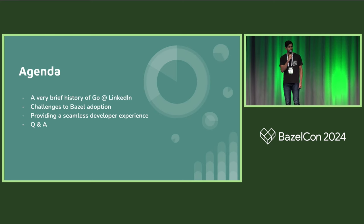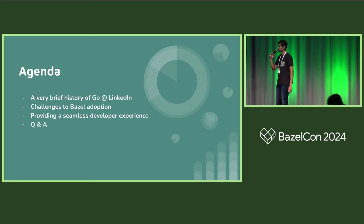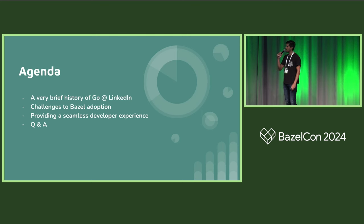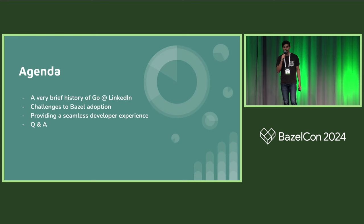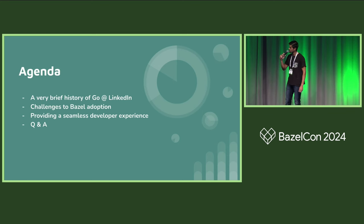We had one before by EngFlow folks with this format as well. So what's on the agenda today? We're going to talk about a very brief history of Go at LinkedIn — A, because it's mildly entertaining, and B, because it's necessary context for the core piece of this talk. We'll talk about challenges to Bazel adoption. Spoiler alert: we're proposing we move our Go ecosystem to Bazel. And then I'll talk about how providing a seamless developer experience was really crucial to pitch this to developers. There will not be a Q&A, but come find me if you have questions.